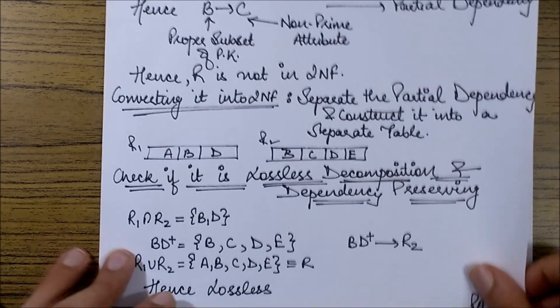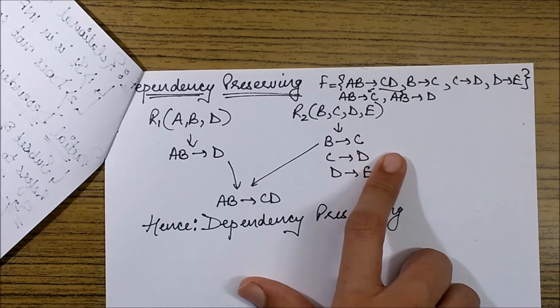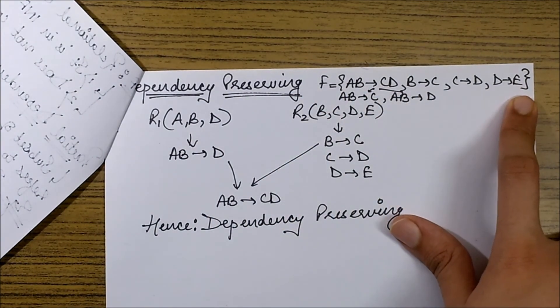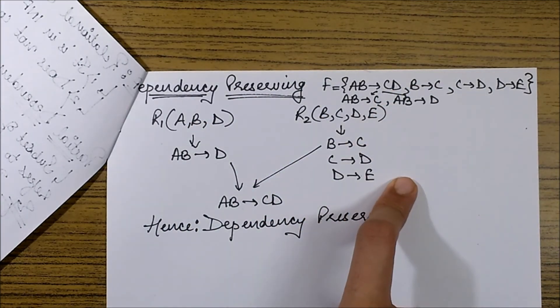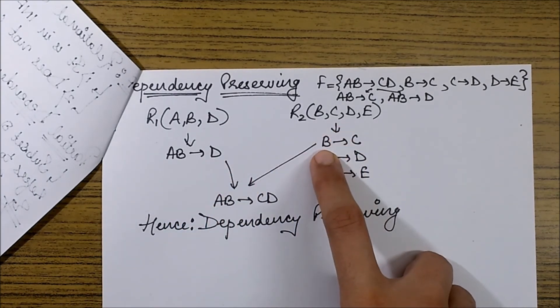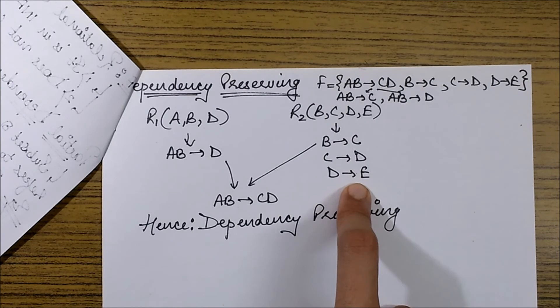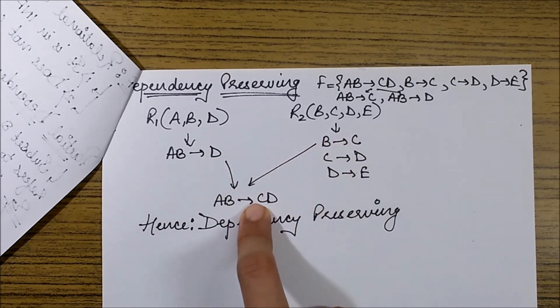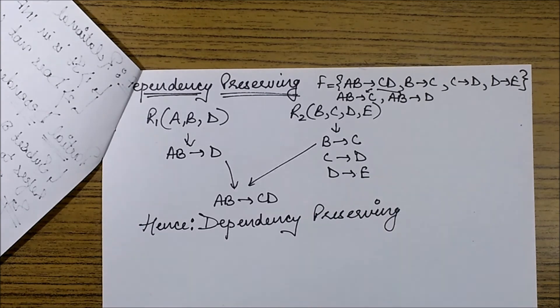And now let's check with the dependency preserving part. So over here we have R1 and R2 over here with us. Now the functional dependency set is also listed over here. We just need to match the dependencies present over here with the new relational schemas. From here I will be able to get AB goes to D. From here I will be able to get B goes to C, C goes to D, and D goes to E. And with the combination of AB goes to D and B goes to C, I will be able to get AB goes to CD. Hence I am able to cover all the functional dependencies as were present originally. Hence I would say the relational schema breakdown is dependency preserving also.